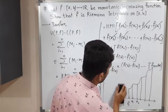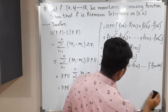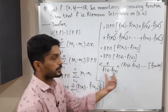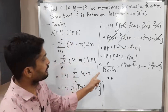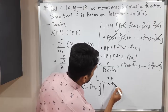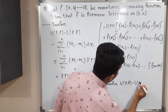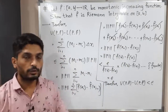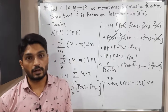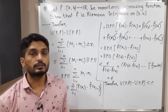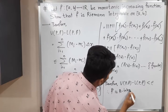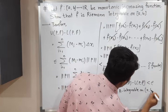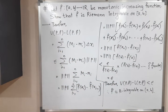Therefore, U(P,f) − L(P,f) < epsilon. We started with the upper sum minus the lower sum and showed it is less than epsilon. By the Riemann criterion for integrability studied in the previous video, we can conclude that F is Riemann integrable on the closed interval [a, b]. Therefore, if a function is monotonic increasing, then it is Riemann integrable.